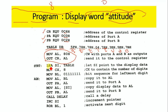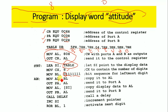Next, 'LEA SI, TABLE' loads the effective address of the lookup table into SI. 'MOV CX, 8' sets the count to 8 because ATTITUDE has 8 characters. Then 'MOV BL, 0111 1111' is loaded — the MSB bit is 0, meaning transistor Q8 will be turned on first. 'MOV AL, BL' then 'OUT PORT A, AL' outputs this value so Port A turns on transistor Q8.